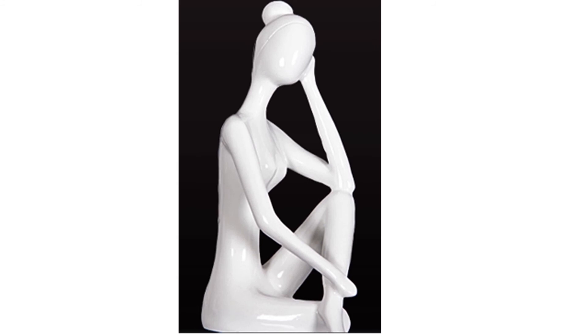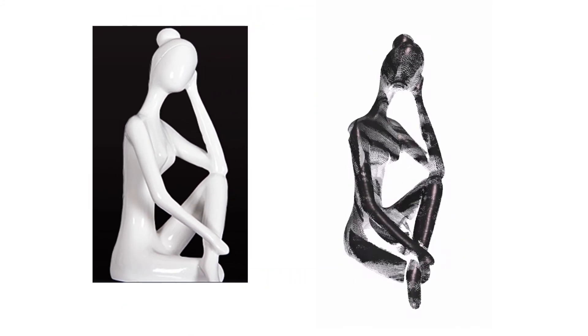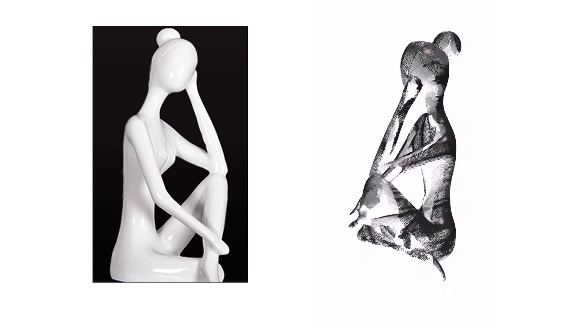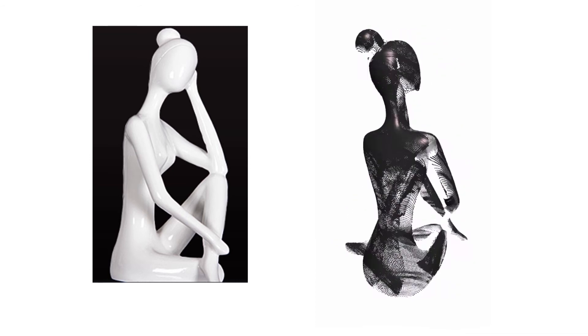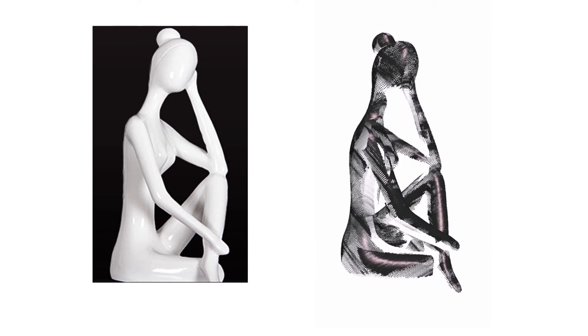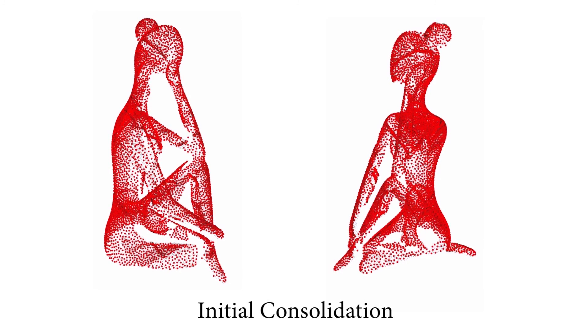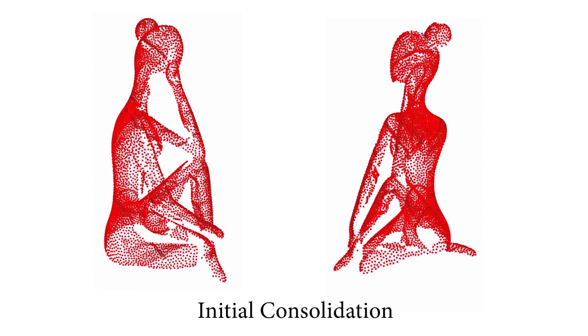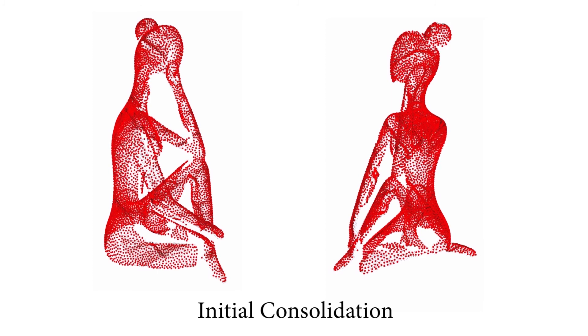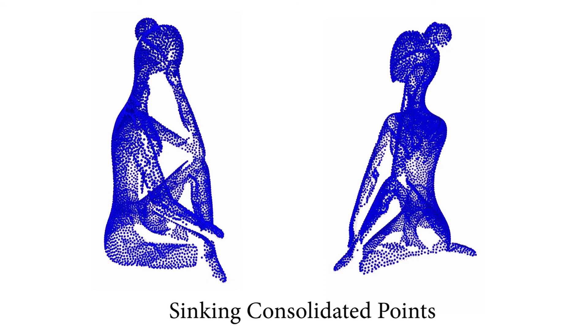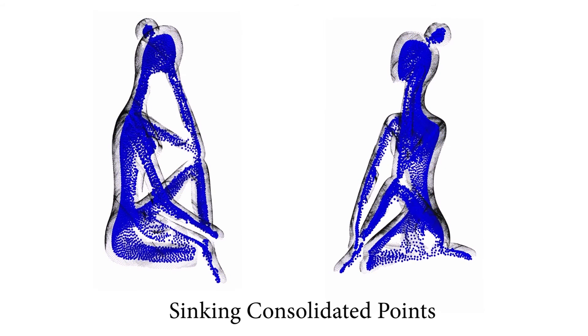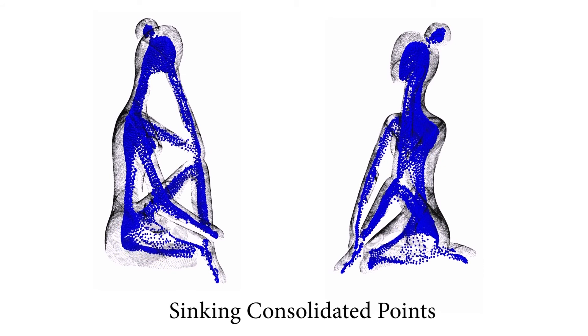Given a real model, the input to our algorithm is an unorganized and unoriented raw scan point cloud with significant missing data. We start by performing an initial consolidation using the WLOP technique to obtain a denoised, oriented and down-sampled point set. We then copy and sync these sample points down into the shape interior to construct a set of anchor points.